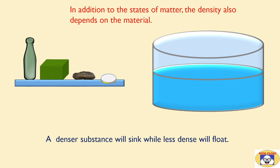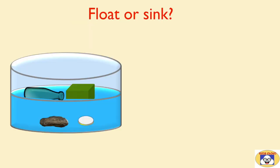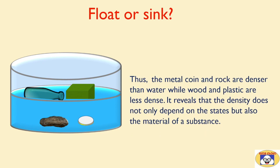Let's see what will happen. You will find that rock and coin will sink while plastic bottle and the wooden block will float irrespective of their volume. Thus the metal coin and rock are denser than water while wood and plastic are less dense. It reveals that the density does not only depend on the states but also the material of a substance.